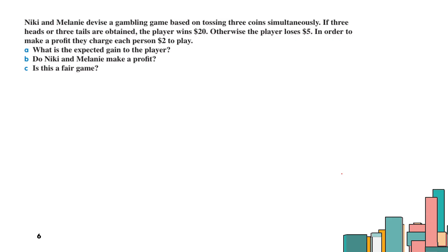Next problem: Mickey and Melanie devise a gambling game based on tossing three coins simultaneously. If three heads or three tails are obtained, the player wins $20. Otherwise, the player loses $5. In order to make a profit, they charge each person $2 to play. We need to make a table to organize the outcomes.